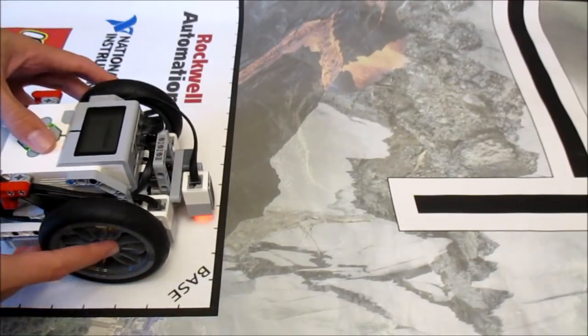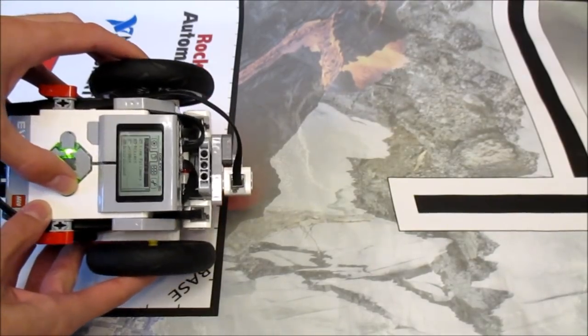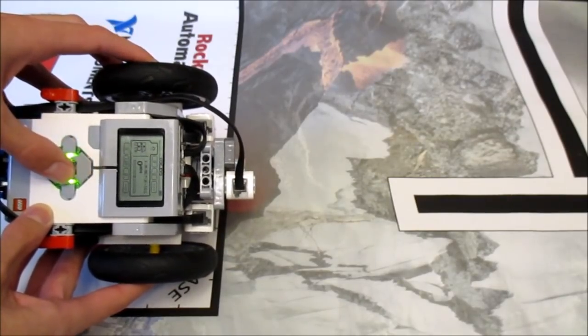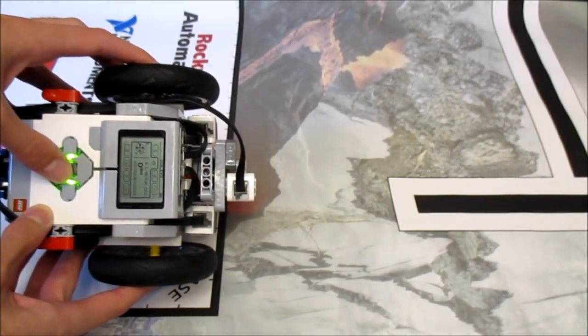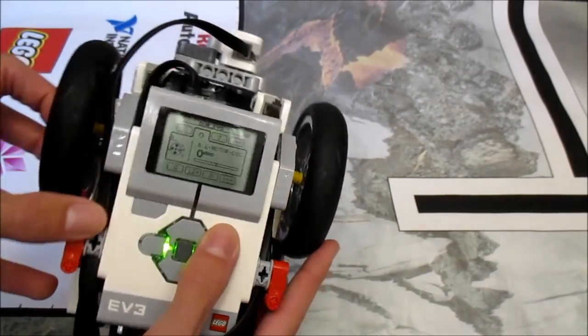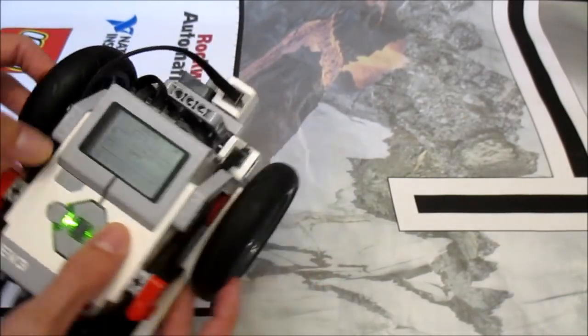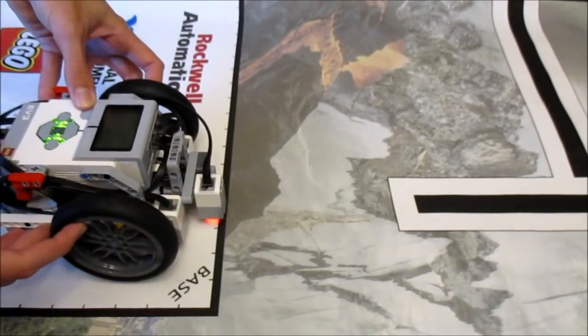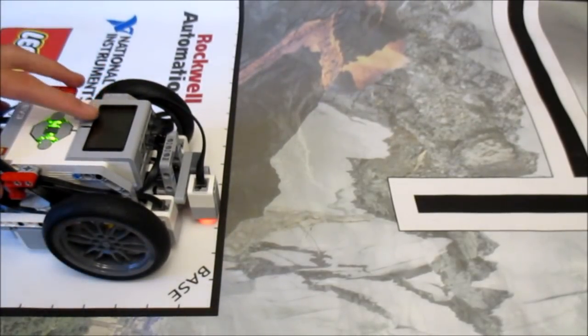The first thing you're going to want to do is take your robot and go over into PortView. We're going to be measuring the number of degrees on one of your drive motors, so that's either the motor in port B or port C. It doesn't quite matter, but you're going to set it down on the table.